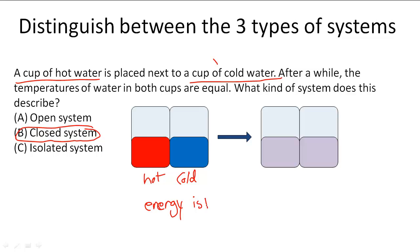Energy is transferred, but mass is not. So mass is not being transferred here. We're not putting more water in one cup or putting water in another cup. The cups are not, they're just exchanging energy in terms of heat to one another. So this describes a closed system.